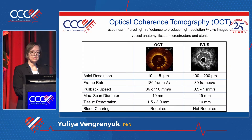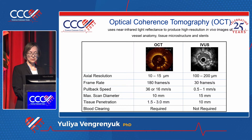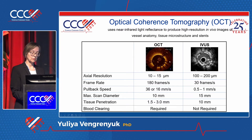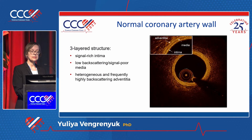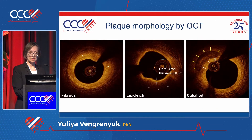Optical coherence tomography (OCT) uses near-infrared light to produce high-resolution images of the vessel wall. Compared to IVUS, the resolution is 10 to 20 times higher and pullback speed is much faster. However, the limitation of OCT is limited tissue penetration — we can only image 2–3 mm from the lumen compared to 10 mm by IVUS — and we also need to clear the vessel of blood.